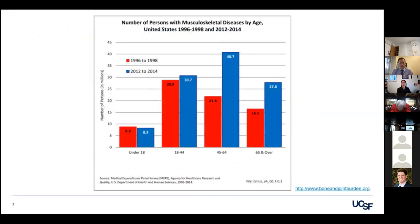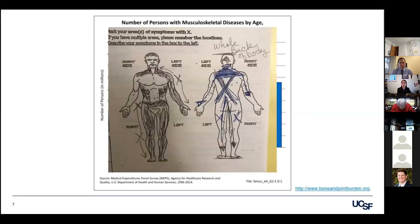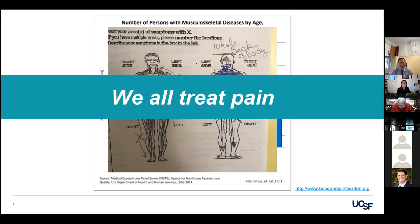One study looking at adults insured by Blue Cross Blue Shield of Michigan, consisting of about 50% of Michigan's commercially insured individuals, found that patients who were opioid naive for one year prior to inpatient procedures and underwent orthopedic and neurosurgical procedures were prescribed the most oral morphine equivalents. The number of patients seeking our help will continue to increase — the average percent of Americans requiring care for a musculoskeletal condition has increased by 21% over the last two decades. The bottom line is we all treat pain.